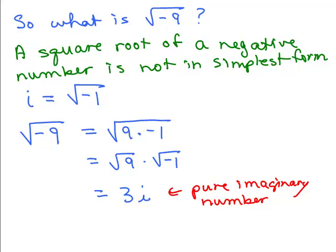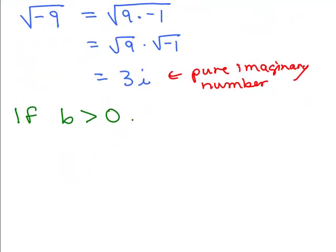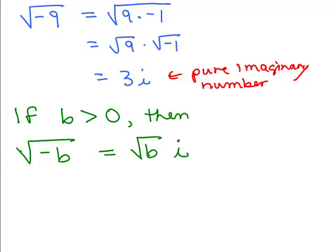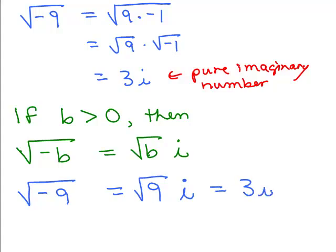In general, this is the rule we need to use. Since the square root of a negative number is not in simplest form, we need to rewrite numbers like this: if b is greater than 0, then the square root of negative b — like negative 16, negative 9 — is written as the square root of b times i. So the shortcut is: if you have the square root of a negative number, it's the square root of the positive part times i. The square root of negative 9 would be 3i.